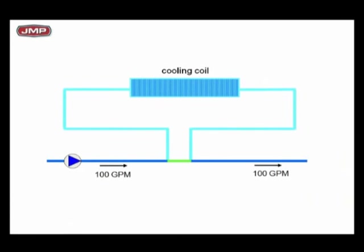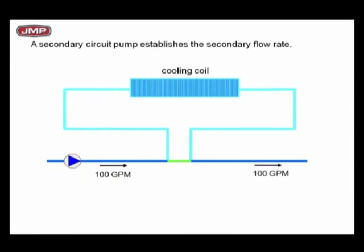I've got a primary-secondary setup now with a primary pump at 100 GPM. I've got my little green common pipe with no pressure drop, no circuit setter, no pressure drop. I've got a secondary loop with a cooling coil and no pump. If I flow 100 GPM through that primary loop, the first T gets 100 GPM and with no pressure drop in the common pipe, 100 GPM flows through the common pipe to the second T and on out. So there's no flow in that secondary circuit. The only way to get flow in that secondary circuit is to add a pump.